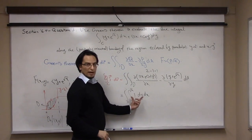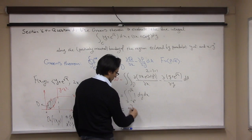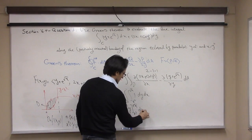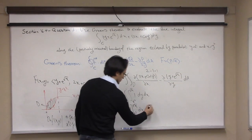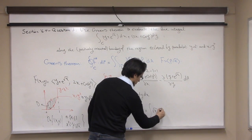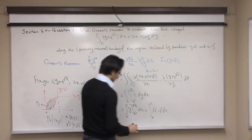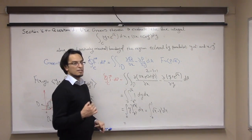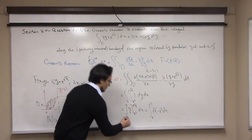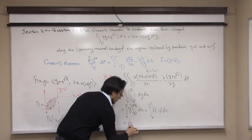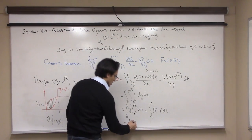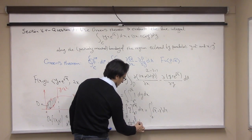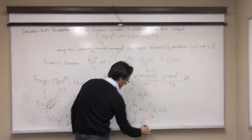Evaluating the inner integral: y goes from x squared to root x, giving root x minus x squared. For the outer integral, the antiderivative of root x, written as x to the one-half, is x to the three-halves over three-halves, and the antiderivative of x squared is one-third x cubed. Evaluating from 0 to 1 gives two-thirds times x to the three-halves minus one-third x cubed.